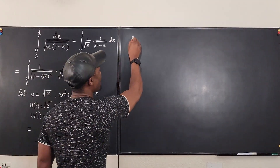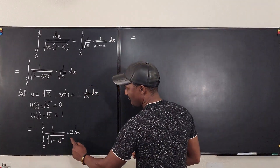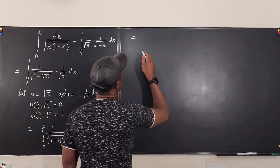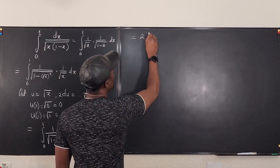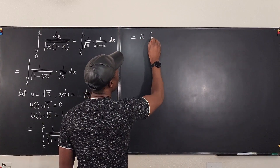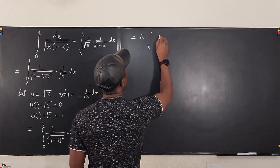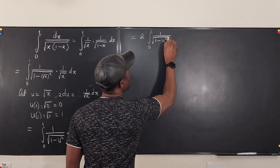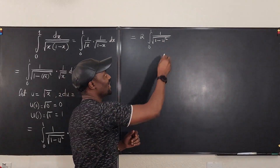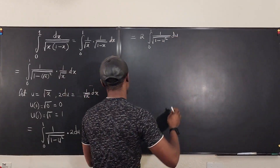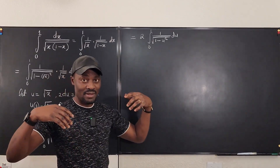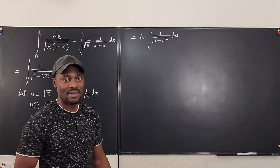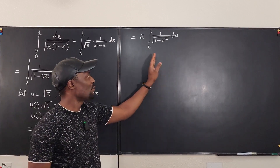I can pull the 2 out and take the integral, so this becomes 2 times the integral from 0 to 1 of 1 over the square root of 1 minus u squared, du. Anytime you see something like this, you know you have to do a trig substitution where u equals sine theta.